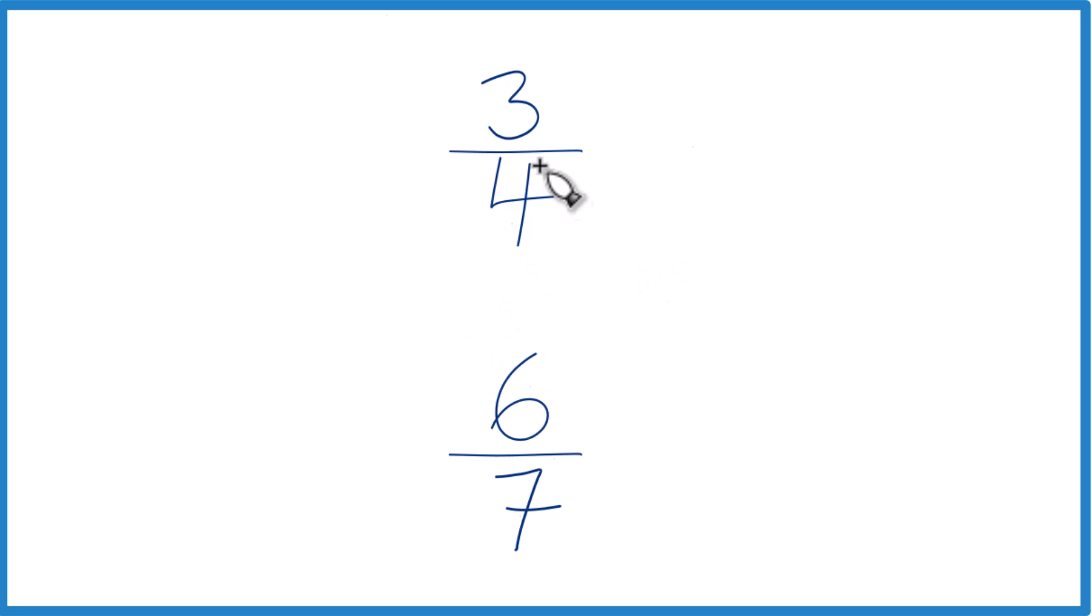You could also find a common denominator. Right now we have four and seven. But if we had the same denominator, we could just compare the numerators and we'd be done.